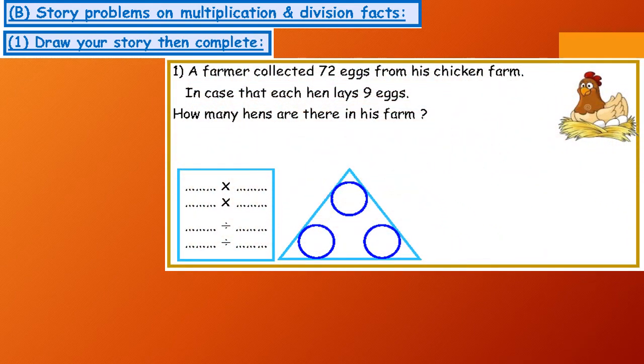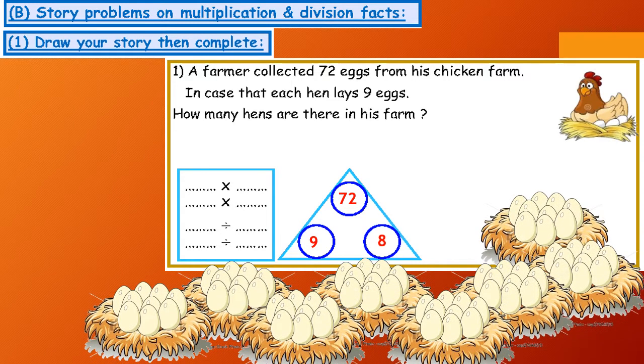Number 1: A farmer collected 72 eggs from his chicken farm. In case that each hen lays 9 eggs, how many hens are there in his farm? 72 and 9. The third number is 8.